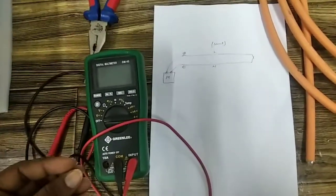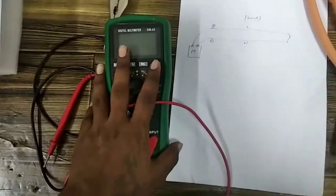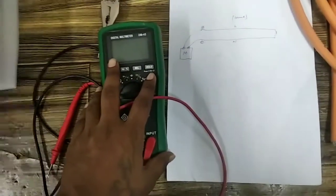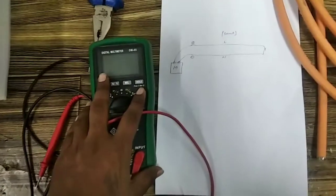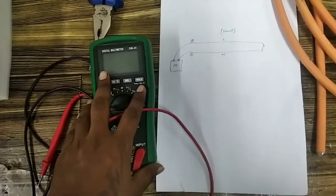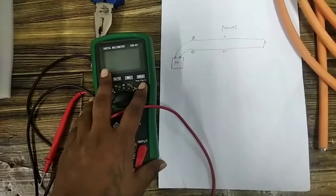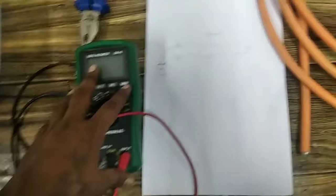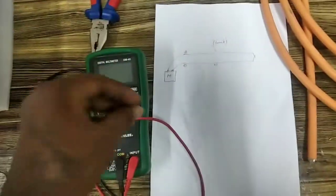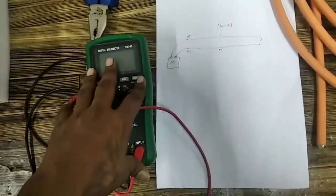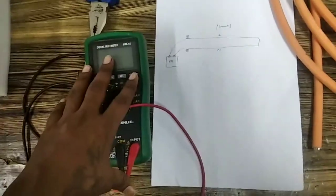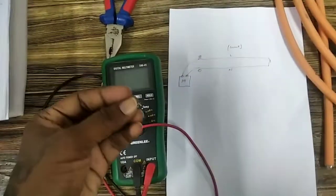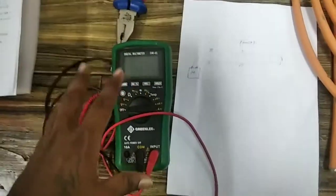During a continuity test, this digital multimeter sends a very small current through the closed circuit to measure the resistance. In any closed circuit there is a very small or negligible resistance. If the value is coming around 20 or 50 ohms that is acceptable and continuity is good. But if it is more than that, it means there is some fault in the cable or the equipment being tested.